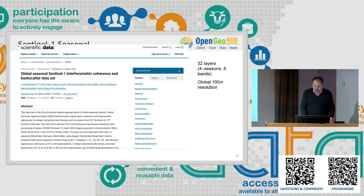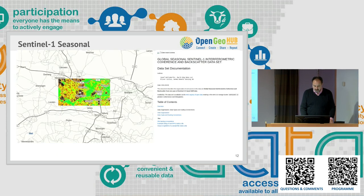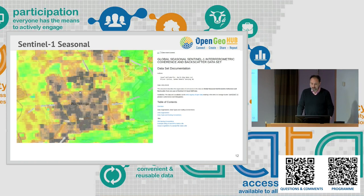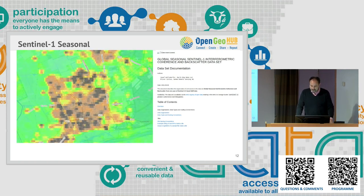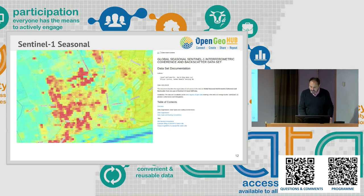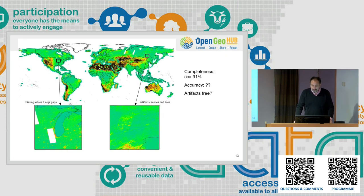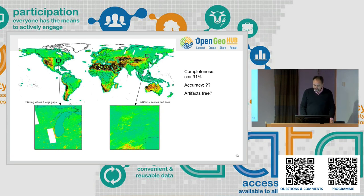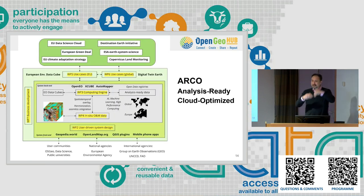One example of usability: there's a Sentinel-1 global seasonal dataset published — a nice group from Wageningen put the data out, it's available on Amazon and it's open. But it's 100-meter resolution, and when you combine the mosaic you can see there are still artifacts and gaps. For example, there's a huge gap over Chicago. This data for us is not analysis-ready because it's incomplete and has artifacts. So what we do is take this data, gap-fill it, try to remove the artifacts, and create what we call ARCO.